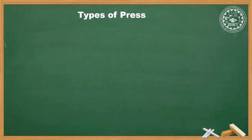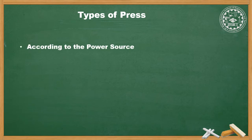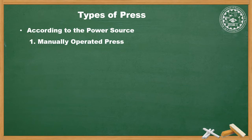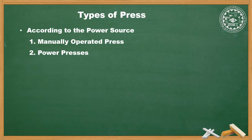Starting with types of press. Press machines are broadly classified into the following groups. Number one, according to the power source: it is divided into two types — manually operated press, that is hand press or fly press, and second is power presses, that is hydraulic or mechanical presses.